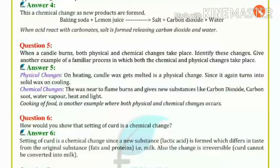Question 5: When a candle burns, both chemical and physical changes take place. Identify these changes. Give another example of a familiar process in which both changes occur. Physical change: on heating, candle wax melts, which is a physical change since it turns back into solid wax on cooling.